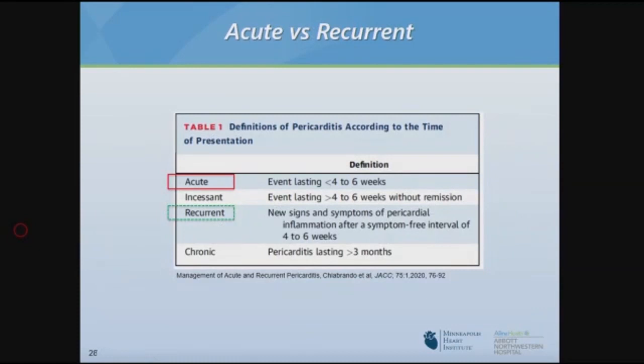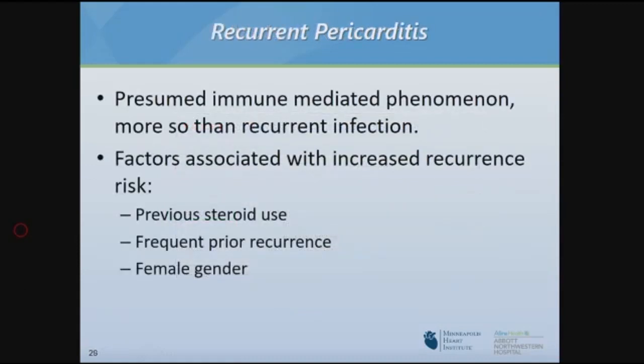In terminology, acute pericarditis is defined as up to four to six weeks; incessant is over four to six weeks; and chronic is over three months, with significant overlap. Recurrent pericarditis typically involves an acute episode, remission for four to six weeks, then recurrence. Recurrence does not have a seasonal pattern, suggesting it is immune mediated rather than viral reinfection. Factors associated with increased recurrence include previous steroid use and female gender.